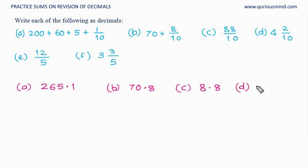D, 4, 2 upon 10. 4 is a whole and 2 tenth, so in the tenth place there is 2. 4.2.